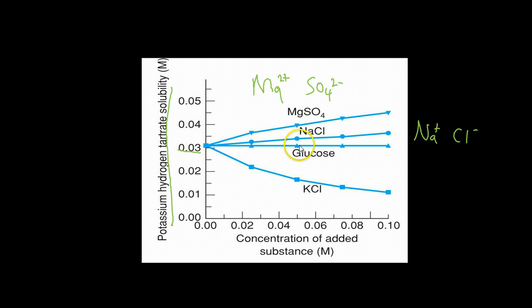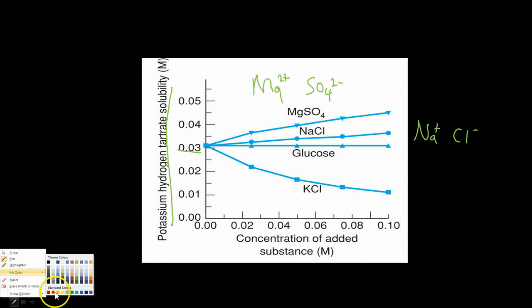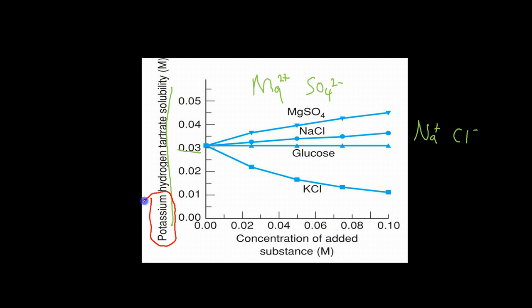And glucose, which we know to be a non-charged molecule, this is a plain old organic, as we increase the concentration of that, that has no effect because that does not contribute to the ionic environment. Now, you may be sort of surprised to see KCl decreases it. But we also have to keep in mind that what we're looking at here is the solubility of potassium hydrogen tartrate. And so potassium here is one of the members in our equilibrium. And so by Le Chatelier's principle, as we add more potassium, we're going to decrease the solubility because we're basically going to push the equilibrium back towards the starting materials.